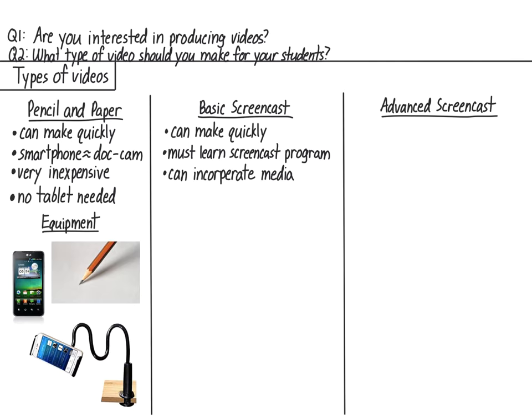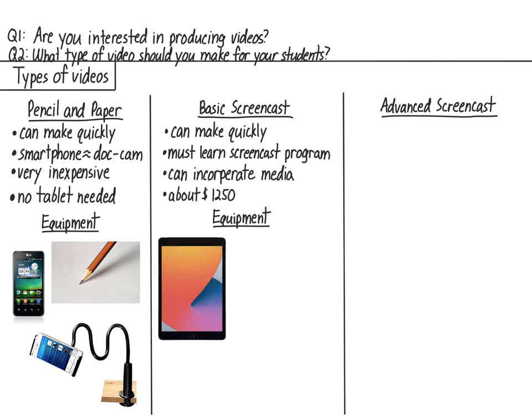The cost of all the equipment you'll need to make a basic screencast is about $1,250, but this can vary depending on exactly what you buy. The equipment you'll need includes a tablet. If you already have one, the startup cost is much less, maybe about $200 or so. I use a 12.9-inch iPad because I find the larger size makes it much easier to write and lay out my video.